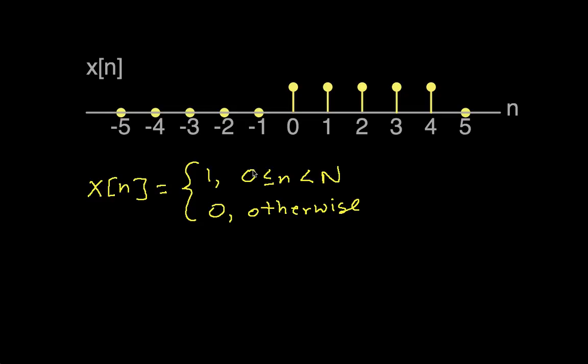So what I've done here is we've graphed a rectangular pulse. In this particular case, N is equal to 5. I have 5 values of x[n] where it's not 0, where it's 1, and then it's 0 everywhere else.